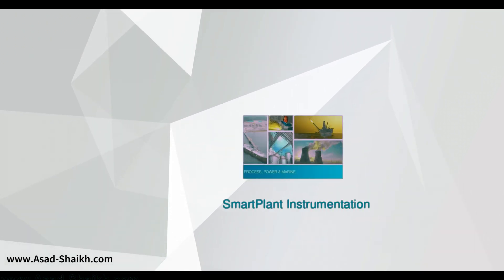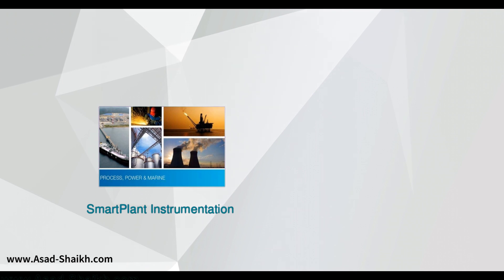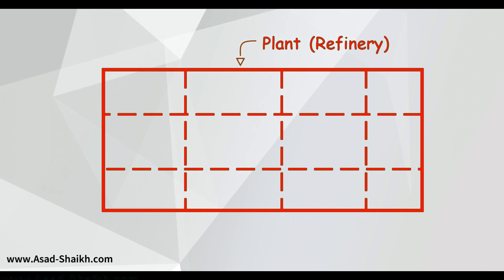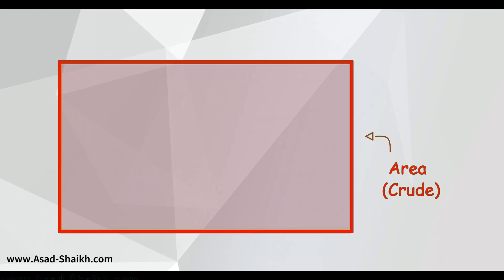One of the things in mega projects is you use a software like smart plant instrumentation and it has something called a PAU system here. Have you heard about this system? If you look at any plant for example you have a new refinery that you set up, a refinery is a very huge complex. So it is divided into various areas. So for example if you see here this is one area for example where you handle the loading. There is one area where you have the crude which is entering, let's call it crude area.